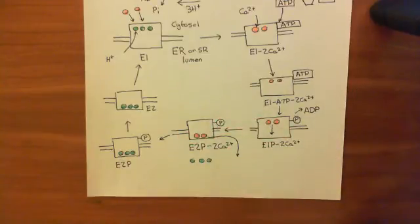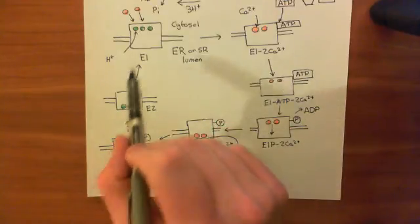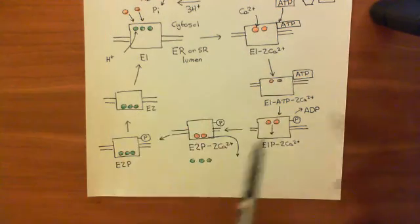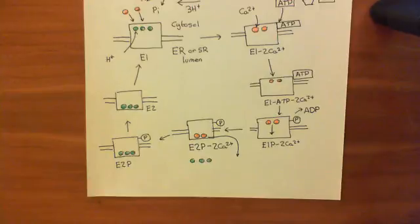Now the proton's affinity for binding there is lower than calcium, so calcium is going to come and displace it, and the whole cycle will repeat again.